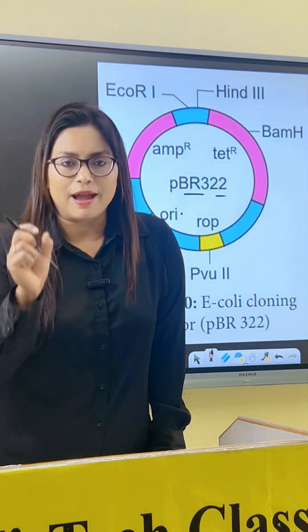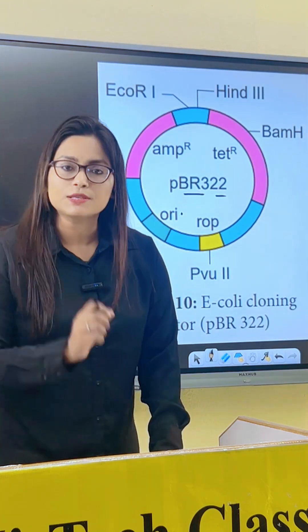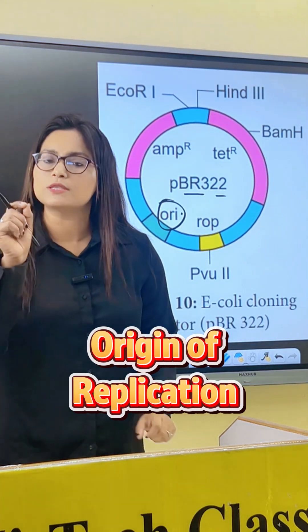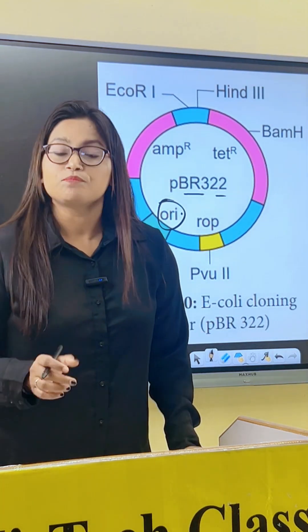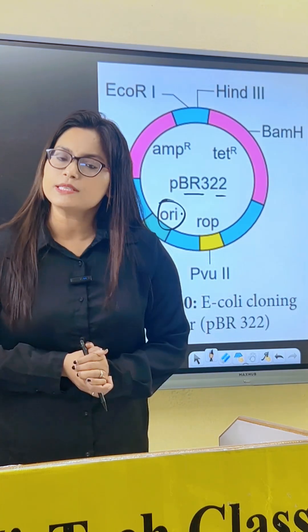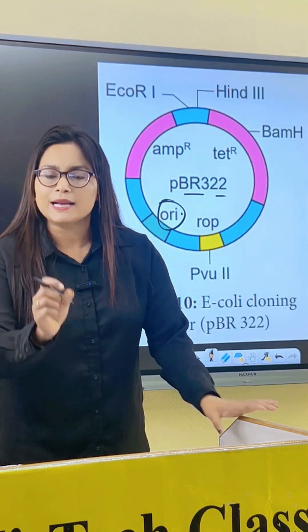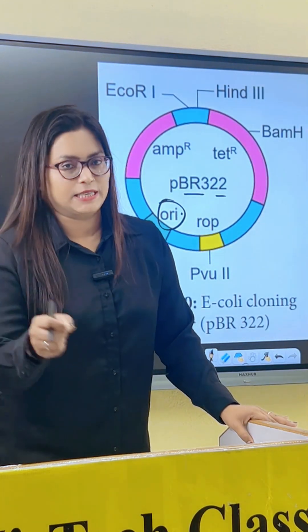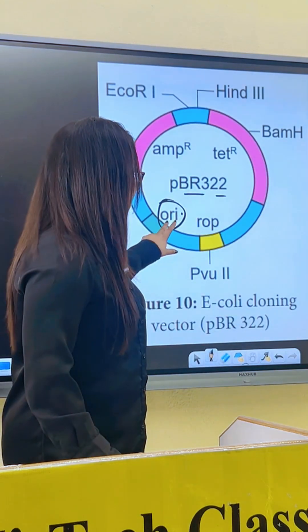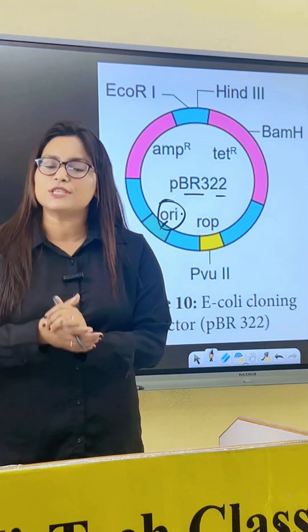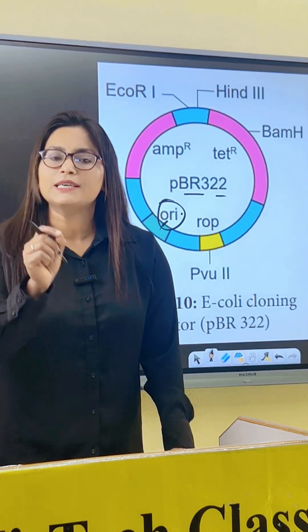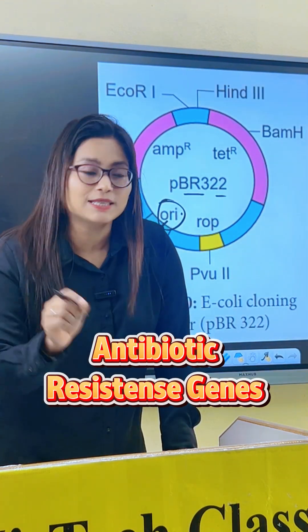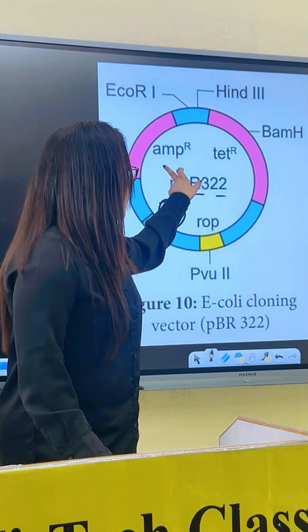What are the main important features a good vector should have? The first is the origin of replication, or ori — it is a DNA sequence from where the plasmid replicates itself. The next important feature is that it contains antibiotic resistance genes.